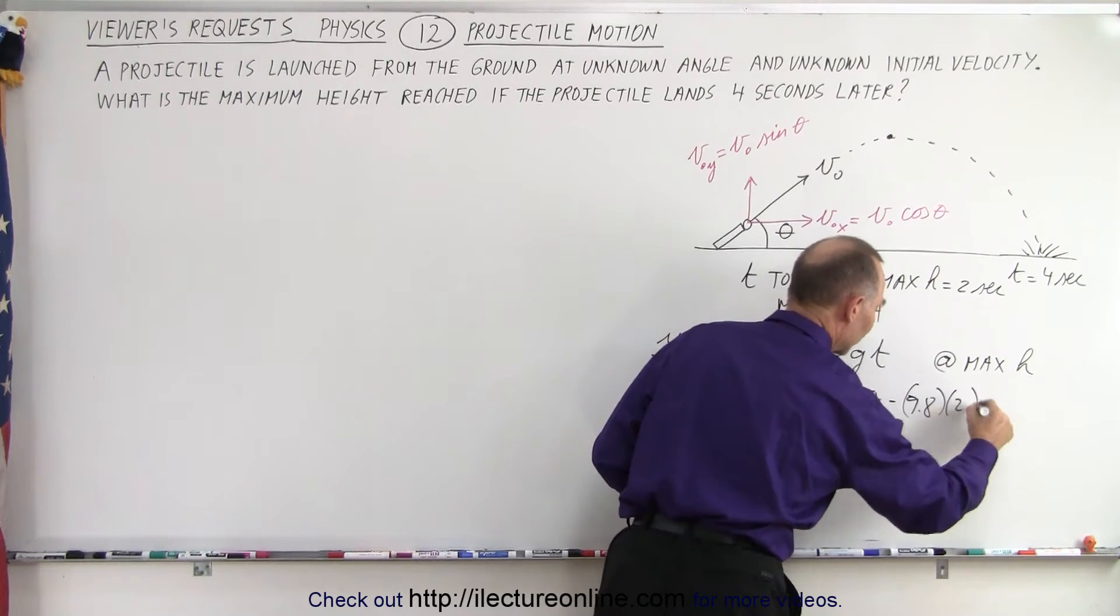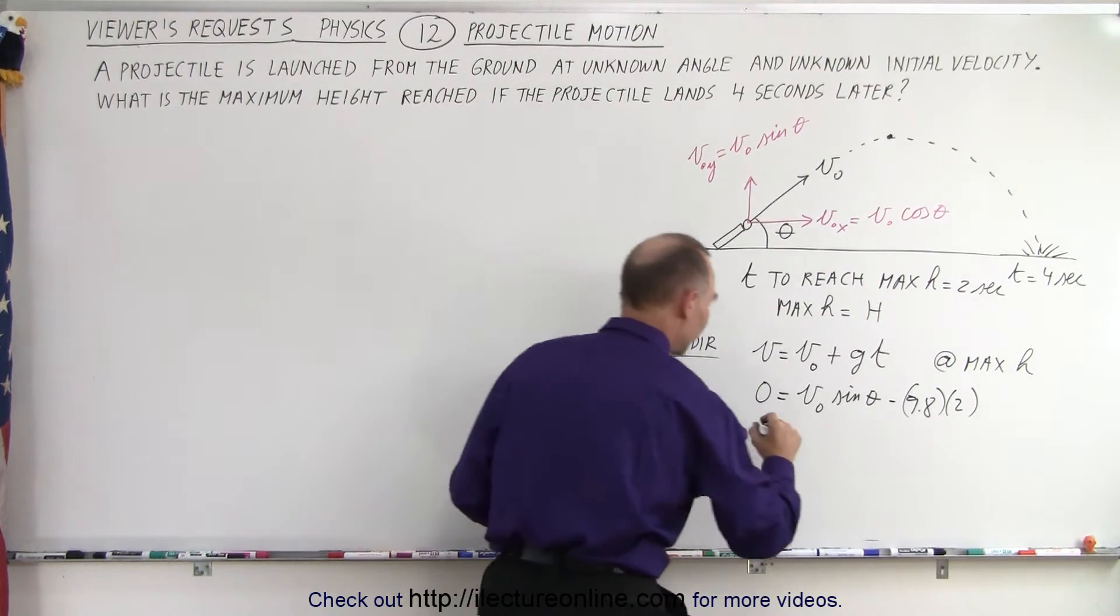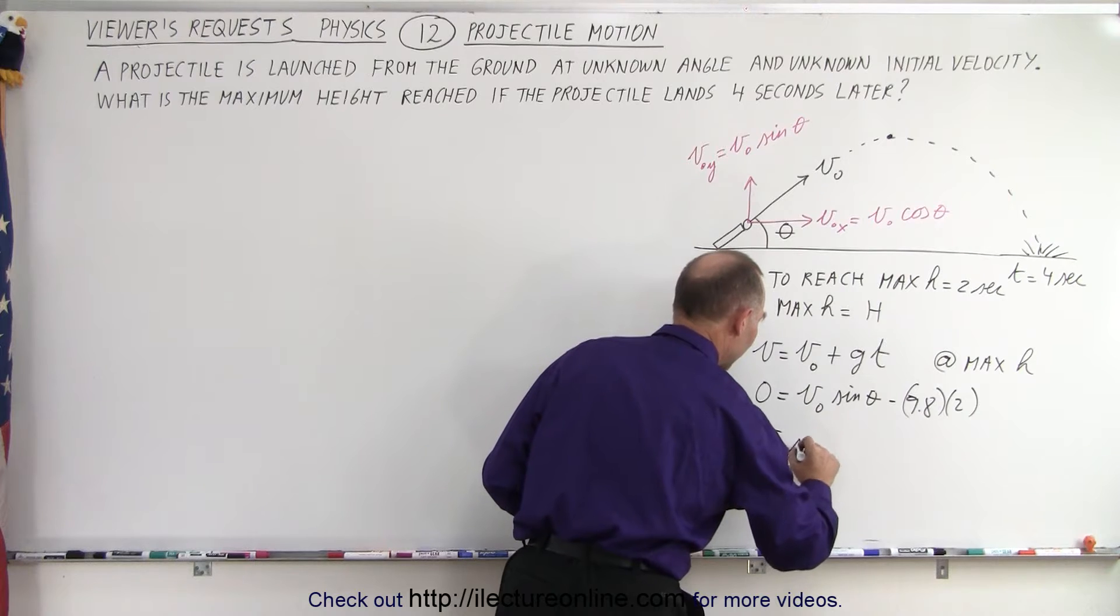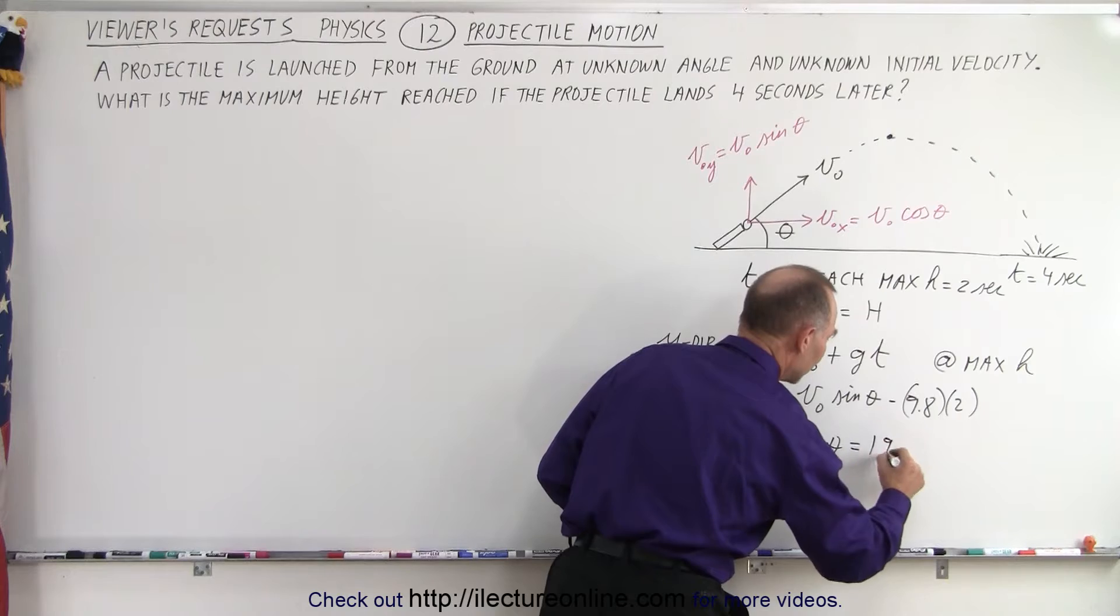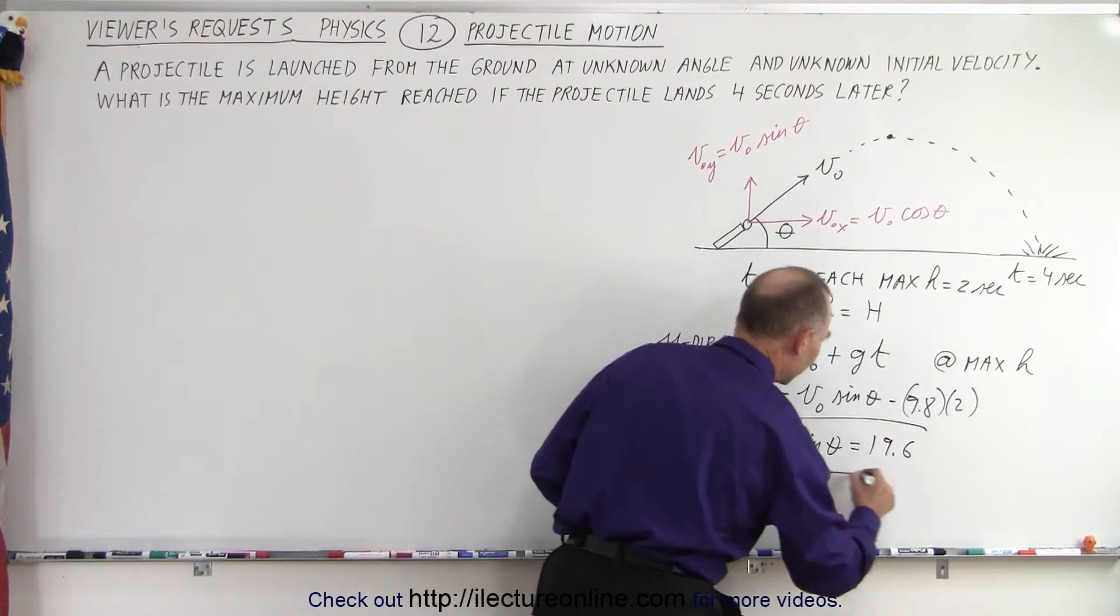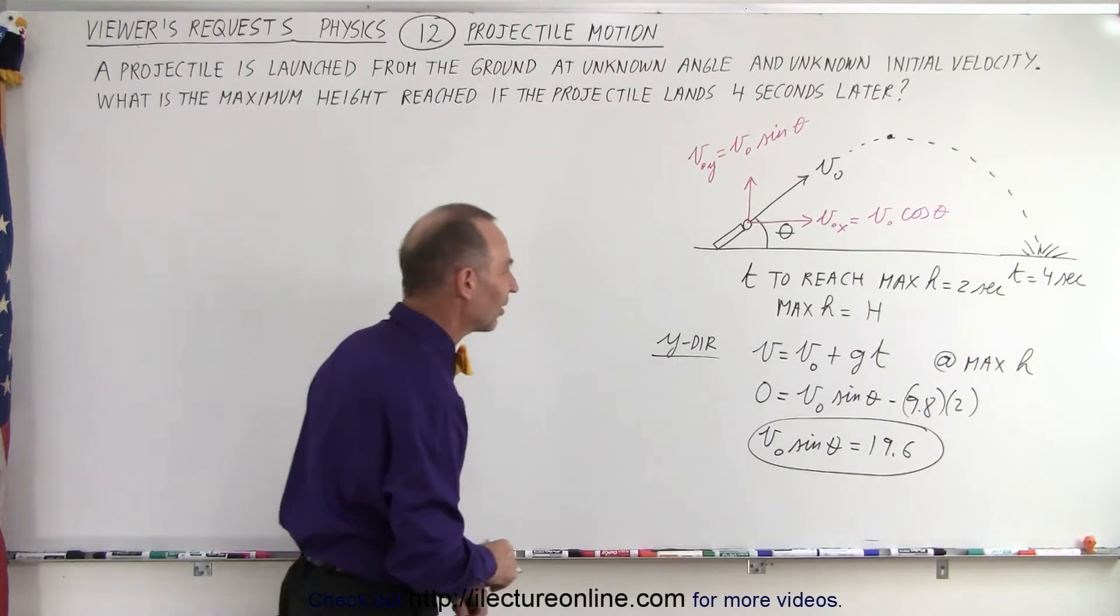It takes two seconds to get there, so this is times two, which means that v initial times sine of theta equals twice that, or 19.6. So now we have a value for v initial times sine of theta.